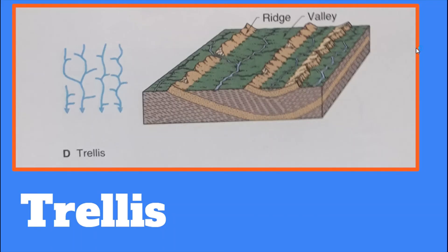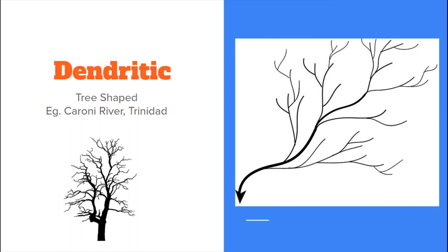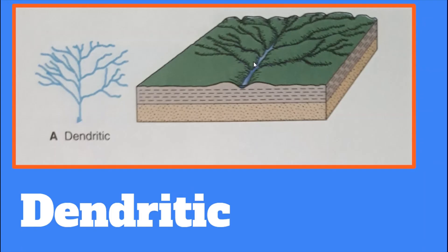This is a more realistic view of the trellis pattern. You can see the ridges and different types of rocks, where the water goes through accordingly. Our third pattern is the dendritic drainage pattern. It is from the Greek word dendrite, which means tree. So the pattern itself actually resembles the branches of a tree, and it develops in gently sloping basins with a uniform rock type. The tributaries flow into each other from any area because the rock type is the same throughout. One example is the Caroni River in Trinidad. This diagram shows a more realistic look of the dendritic drainage pattern.